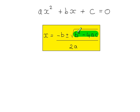If b squared minus 4ac — this value inside the square root — is a positive value, then you will get a plus or minus this section here, so you have two solutions or two roots.